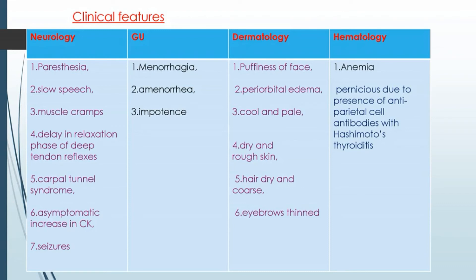Genitourinary features include menorrhagia, amenorrhoea, and impotence.